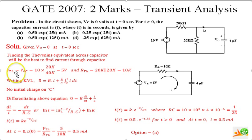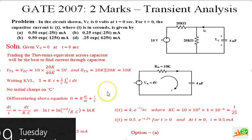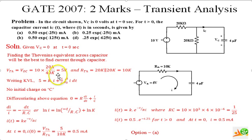V Thevenin we can find, that is open circuit voltage, that is 10 times 20k over 40k. That means we are finding voltage open circuit voltage across this, so this will be 20k. This comes out to be 5 volts.